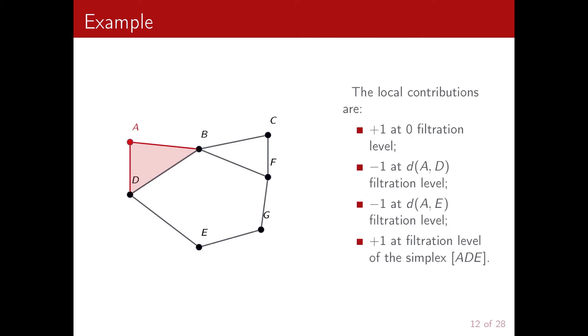So this local contribution will be four. We will have a plus one at zero filtration level given by the single point A. Then two minus one at different filtration levels at the level of the edges A, B and A, D. And then plus one at the filtration level of the triangle A, B and D.